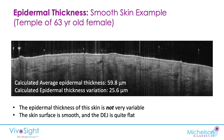Contrast that with this next example: the temple of a 63-year-old female. You can see straight away that her skin is a lot smoother, and the DEJ is actually very, very flat. Her epidermis is thinner at just under 60 microns, and the epidermal thickness variation is 25.6 microns — a lot lower. That's normal as you get older: the DEJ does tend to flatten out, and you lose those rete ridges and so forth.